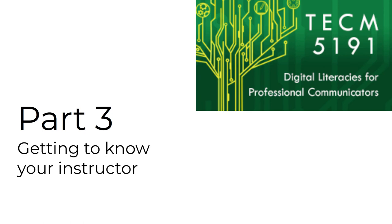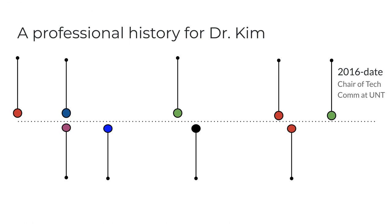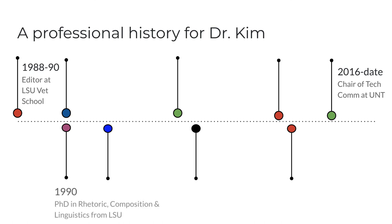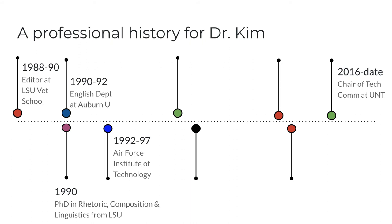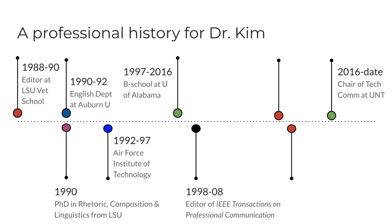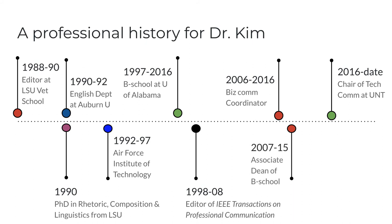Let me close this introductory lecture by helping you get to know a little bit about me. I'm at UNT. In 2016, I joined the university as a professor and chair of the tech comm department. My lifelong passion for language eventually led me to grad school to study linguistics and technical writing. While in school in the late 1980s, I worked as a technical editor. I earned my PhD from LSU in 1990 after completing a dissertation on applications of discourse analysis to professional writing. My first job as a professor was in the English department at Auburn University. In 1992, I began work as a professor and researcher at the Air Force's postgraduate school. In 1997, I joined the business school at the University of Alabama, where I stayed for 19 years. During that time, I served as the editor of an IEEE research journal for more than 10 years, and I also held some administrative positions. And in 2016, I joined UNT.